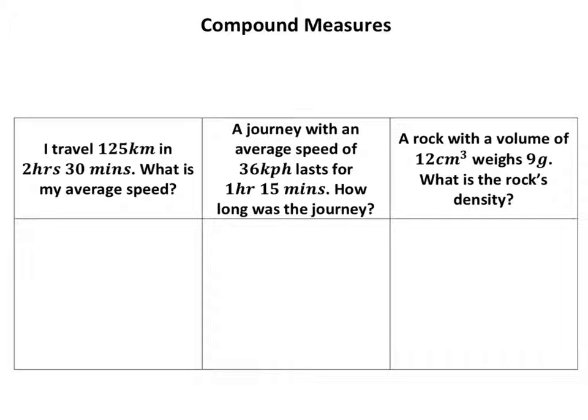Okay, we're looking at compound measures now. Compound means you're joining stuff together, so like compound shapes where lots of different shapes are stuck together to make one big shape. Compound measures are lots of different measures stuck together to make another measure. So speed, for example, is one because that uses kilometers and hours or meters per second.